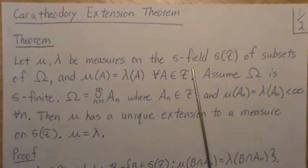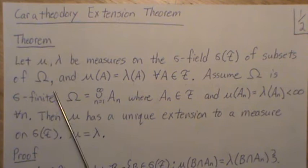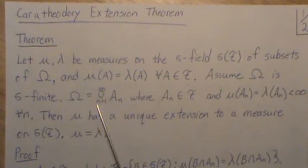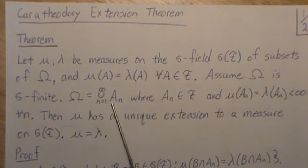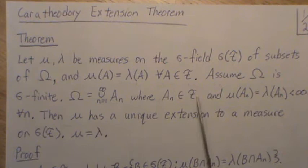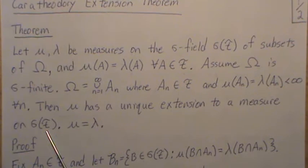Let mu and lambda be measures on a sigma field, and the sigma field is the minimum sigma field generated over F, which is a field — subsets of omega — and the two measures agree for every set in the field. Assume omega is sigma finite, meaning it can be broken up into pieces where each piece has finite measure. So omega can be represented as an infinite union where every A_n is in the field, and the measures agree on the field and are both finite for all n. Then mu has a unique extension to a measure on the sigma field, and mu is equal to lambda.